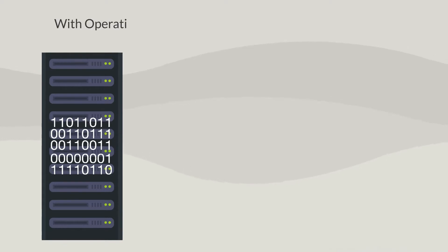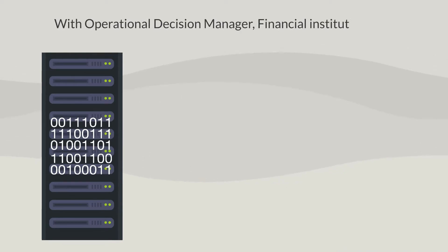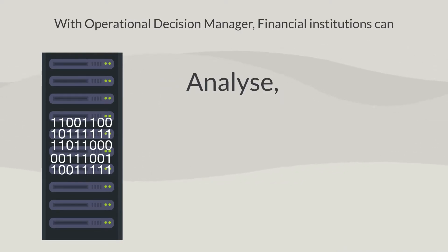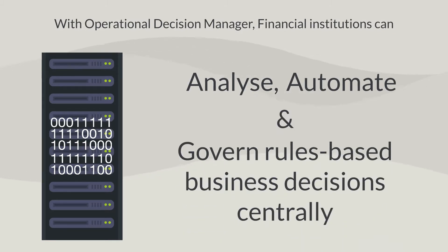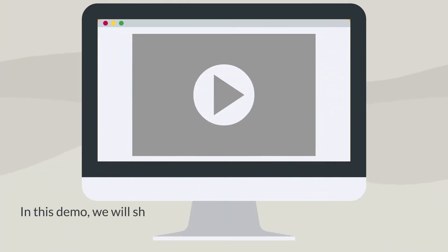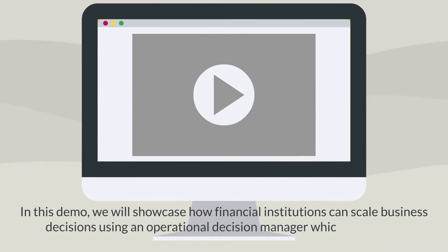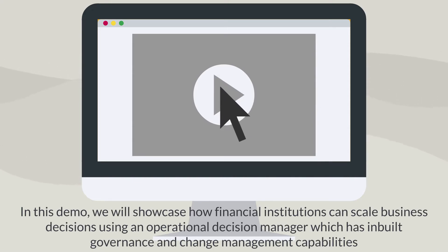With IBM Operational Decision Manager, financial institutions can analyze, automate, and govern rules-based business decisions centrally. In this demo, we will showcase how financial institutions can scale business decisions using Operational Decision Manager, which has in-built governance and change management capability.